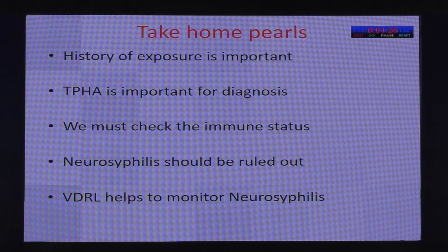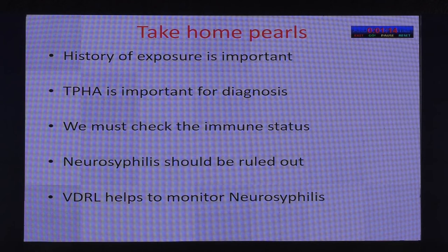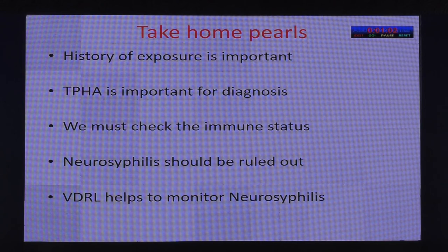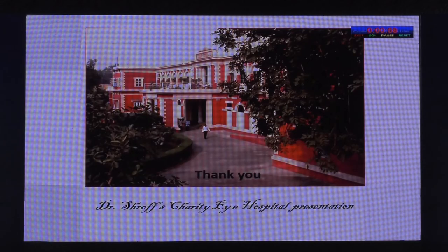Syphilis is a sexually transmitted infection caused by Treponema pallidum, also transmitted from mother to baby during pregnancy or at birth, causing serious long-term problems including arthritis, brain damage, and blindness. Key takeaways: history of exposure is extremely important and requires extra time to obtain. TPHA is important for confirming syphilis. Always check immune status of the patient when suspecting syphilitic infection. Neurosyphilis must be ruled out, and VDRL is important to monitor neurosyphilis management. Thank you.